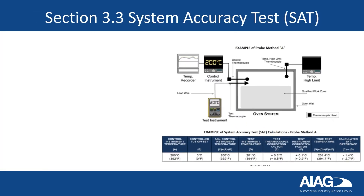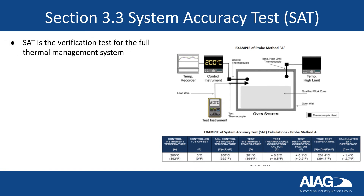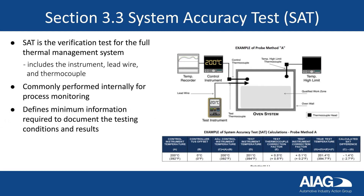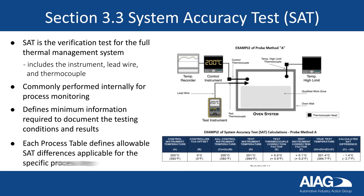Section 3.3 covers the system accuracy test, which verifies the full thermal management system, including the instrument, lead wire, and thermocouple. The SAT is commonly performed internally for process monitoring. It defines the minimum information required to document the testing conditions and results. Each process table defines allowable SAT differences applicable for the specific process step.